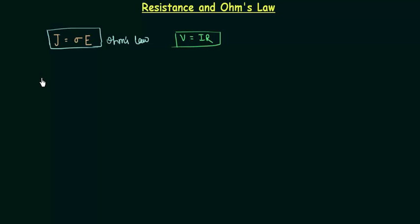I will multiply the cross section area A on both sides. So I am having JA equals to sigma AE. If you remember, the current density is equal to current per unit cross section area. This is my current density. If I multiply A on both sides it gives me I equals to JA.